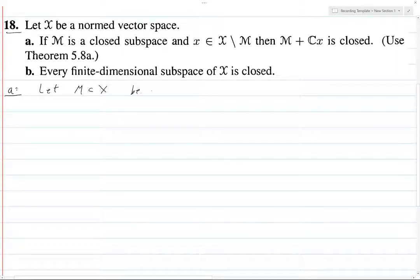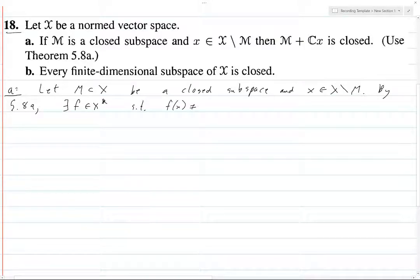Let M and X be a closed subspace, certainly a proper closed subspace, and little x in big X set minus M. So by theorem 5.8A or proposition, there is some linear functional F on X such that F of x is non-zero and F restricted to M is zero.